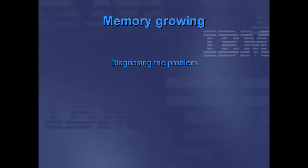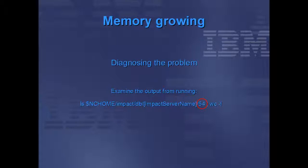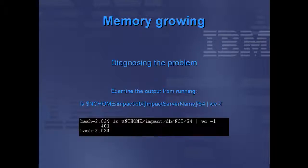In diagnosing the problem, we look at the contents of the disaster recovery directory. For Impact 5, 6, and 7, this is directory number 54 off the directory named after the Impact server in the db directory. Performing a word count of the lines output by the ls command gives a quick overview of the number of records held in the failed event data type. In this example, there are 400 data items. The additional file is the roots file connecting the contents of the directory with the rows in the memory resident database.